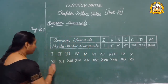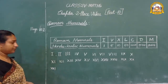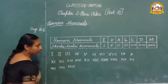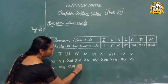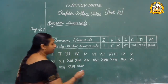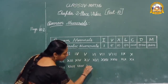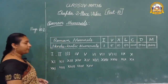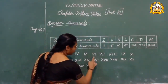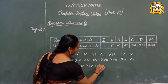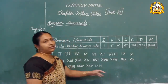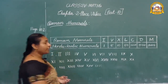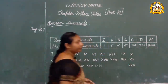Then twenty-one means twenty plus one — XXI. Twenty plus two is twenty-two — XXII. Twenty plus three is twenty-three — XXIII. Then twenty-four — twenty plus four — XXIV. Twenty-five: we write X two times, then V — XXV. Then twenty plus six — XX then VI — XXVI. For thirty, it is three times X — XXX.